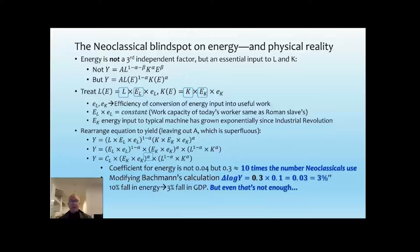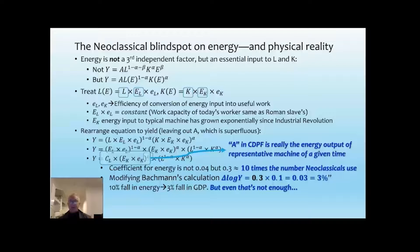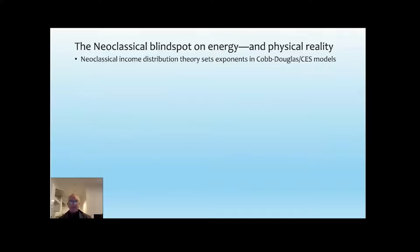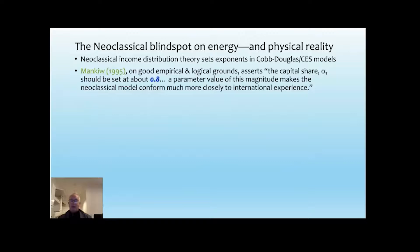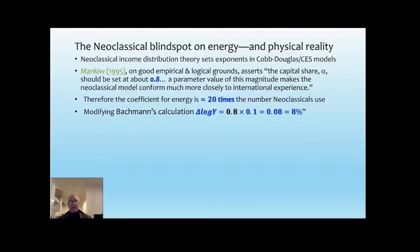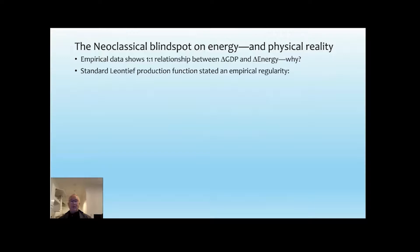So if you modify Bachmann's calculation, you find that rather than a 10% fall in energy causing a 0.4% fall in GDP, you're going to get about a 3% fall in GDP. So that's dramatically different, but it's still not enough. I'll give you a little elaboration here. When you do this reworking, you can show that what they call technology in the Cobb-Douglas production function is really the energy output of a representative machine at some time in history. So you have Mankiw making an extremely good case that alpha should actually not be 0.3, but 0.8. If you do that, then you get a coefficient for energy, which is about 20 times the number that neoclassicals use. And if you feed that into Bachmann's calculation of what would be the impact of losing 10% of the energy supply to Germany, rather than getting the valuation he gave initially of 0.4%, you're now getting an 8% impact. Now that's huge, but it's still not enough, because when you look at the empirical data, as I showed you earlier, it's a 1-1 relationship.